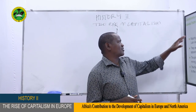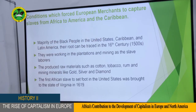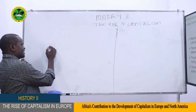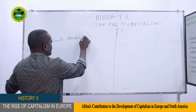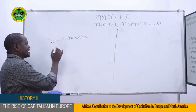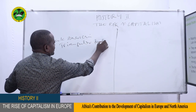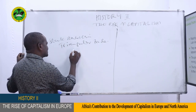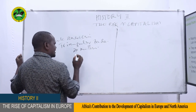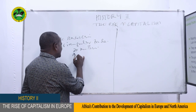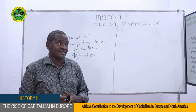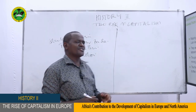Let's now look at the conditions which forced European merchants to capture slaves from Africa to America and the Caribbean. The majority of black people we see in America today — the so-called Black Americans — most of them reached America through what we call triangular trading. They were taken to North America and West Indies as slaves. In America today, there are more than 30 million black people. In a country like Brazil, there are more than 90 million people who are a mixture of black people and mulattos.